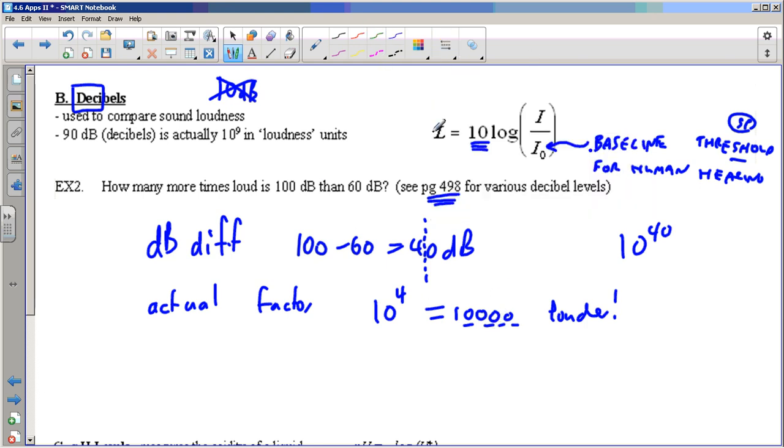A common question here is, what happens if the decibel difference isn't an even number of tens? Say, how many more times is 100 decibels than 63 or something like that, and it ends up being a fraction? Well, I still just put a decimal there, and it would be 10 to the exponent 3.7 instead of an even number. So don't worry if it ends up being a fraction. That still all works. And again, notice I didn't use this formula. I did this fast calculation, this fast, easy calculation. And I'm about to show you why that works in this next example.